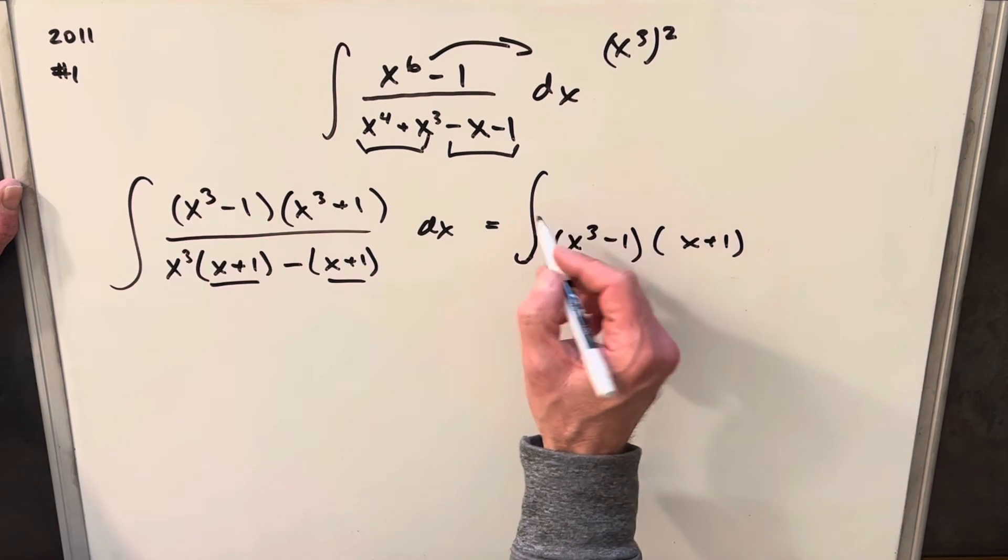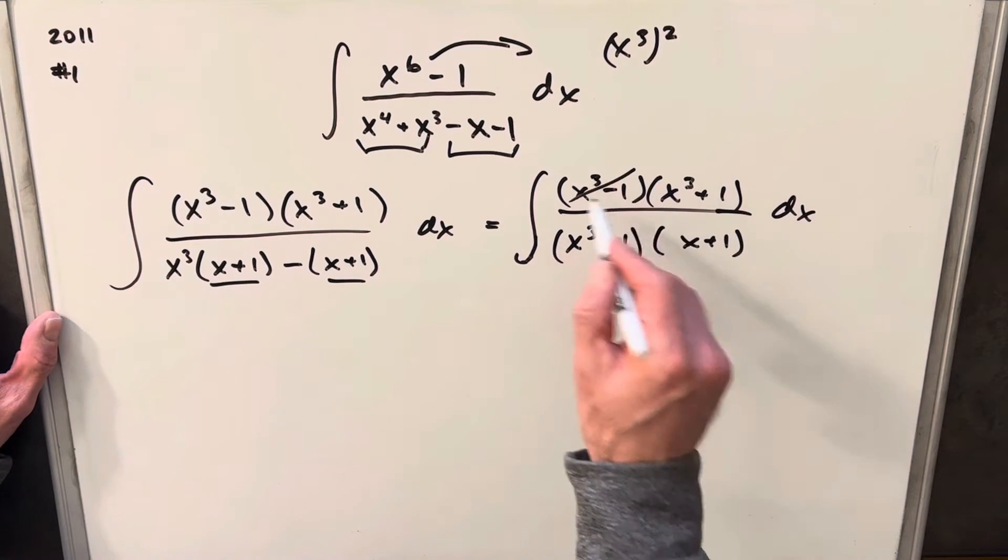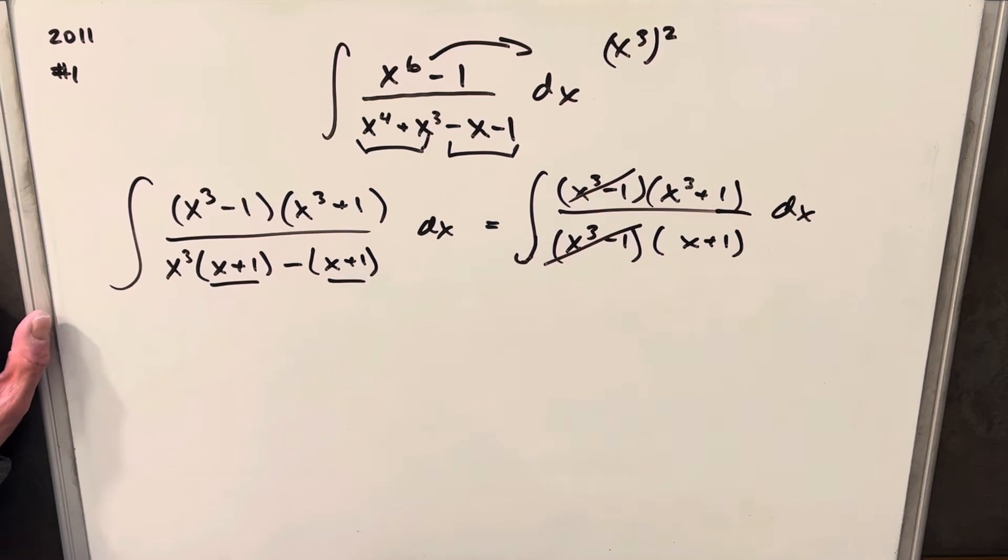Then we'll just rewrite this numerator. Then from here, we have some nice cancellation because this is the same term, so these will cancel. And now we've simplified this a little bit, but I think we can even do more factoring.